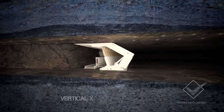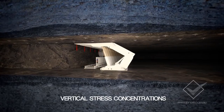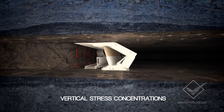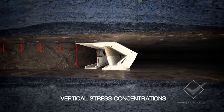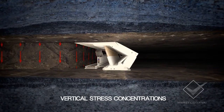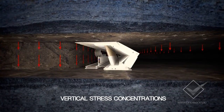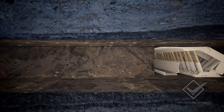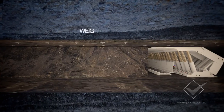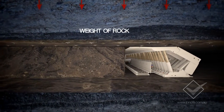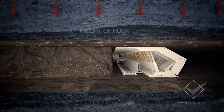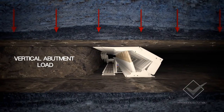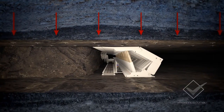Vertical stress concentrations occur on the longwall face at the solid coal edges of the face and pillars, and a zone then exists where the ground has not fully subsided onto the goaf. The weight of the rock in this zone is carried by the solid strata and creates additional loading, referred to as the vertical abutment load.